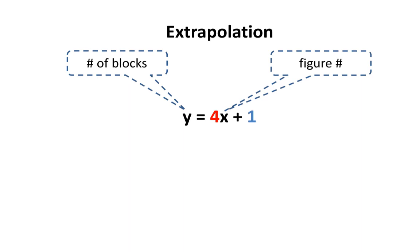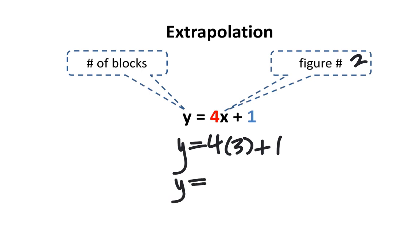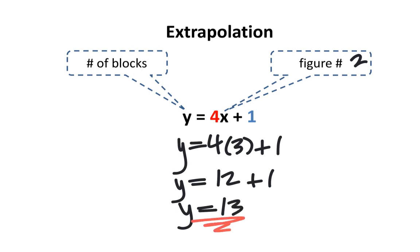Let's say I want to extrapolate the number of blocks in figure 3. Since x represents figure number, I can replace it with the number 3, and I'm going to put it in brackets. Everything else stays the same. Using BEDMAS, I need to multiply before adding. Therefore, 4 times 3 is 12, and afterwards I'm going to add 12 and 1, which is equal to 13. Therefore, the number of blocks in figure 3 is 13 blocks. You'll notice that this matches up with the extrapolation we did with the diagrams, the table of values, and the graphs.